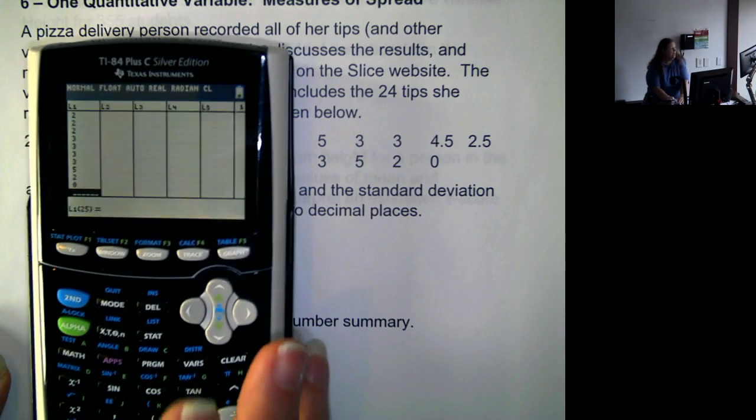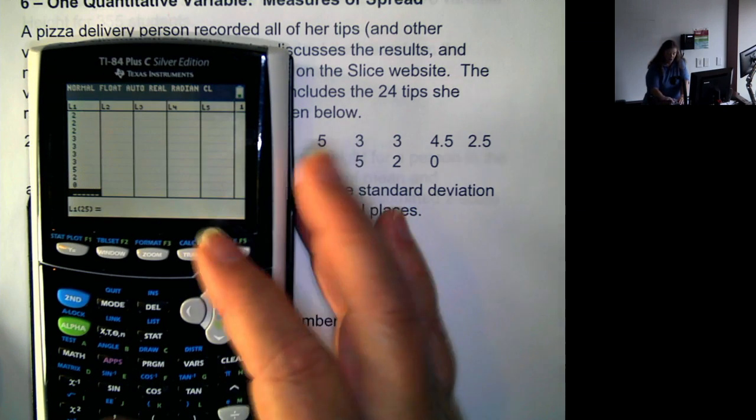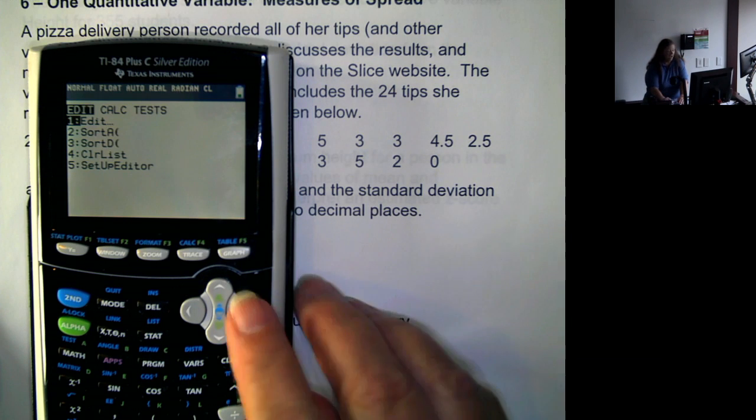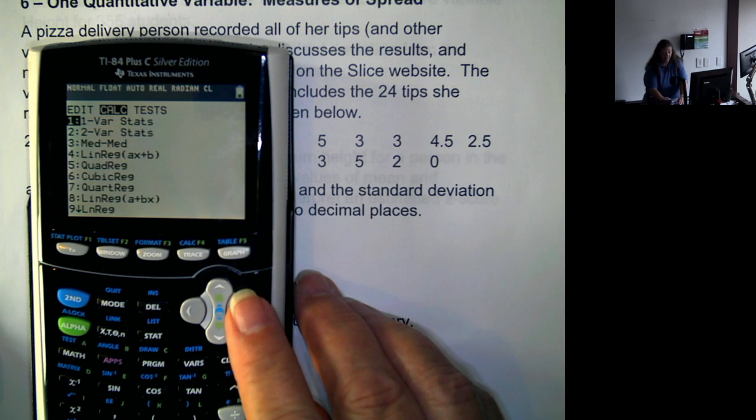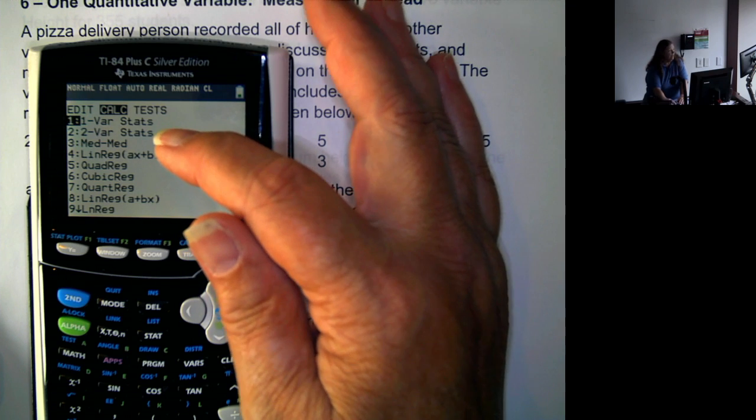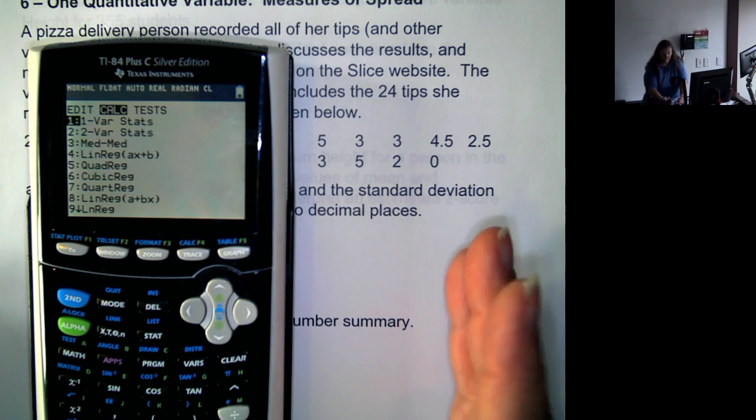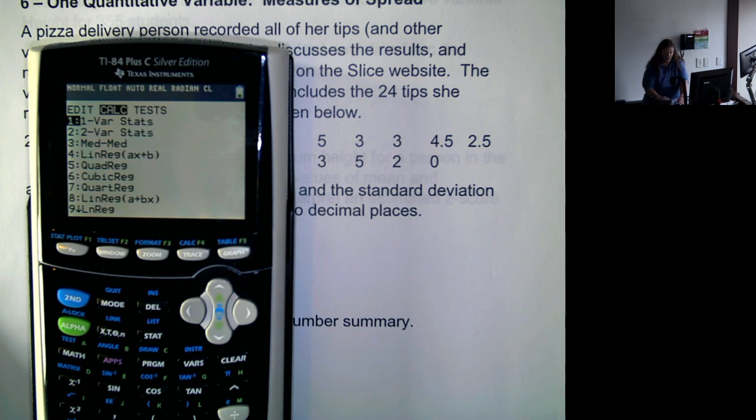Now we want to do a calculation, so we're going to go back to stat. And now we're going to go over to calculate. And we want to calculate one variable statistics. We only put in one set of data, so we want the statistics for that set of data. So we hit enter.